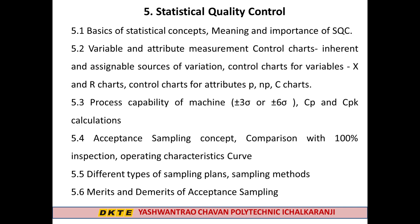The last topic of this subject is Statistical Quality Control, which has 18 marks. Sub-topics include Basics of Statistical Concepts, Meaning and Importance of SQC, Variable and Attribute Measurement Control Charts such as X-Bar Chart, R-Bar Chart, and Control Charts for Attributes like P Chart, NP Chart, and C Chart. Also covered are Process Capability of Machine, Acceptance Sampling Concept, Comparison with 100% Inspection, Operating Characteristics, Different Types of Sampling Plans, Sampling Methods, and Merits and Demerits of Acceptance Sampling.